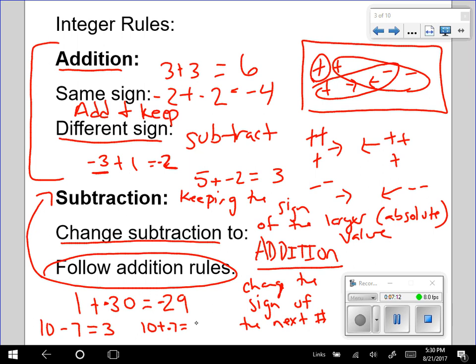There's different signs. We subtract. 10 minus 7 is 3. And we keep the sign of the larger value, which is 10. Notice, if I subtract right here, it works. If I change it to addition, it works. That's why we are able to change subtraction to addition and change the sign of the next number. It works. We can do it either way.